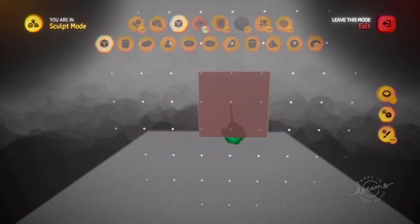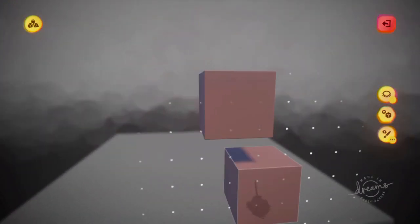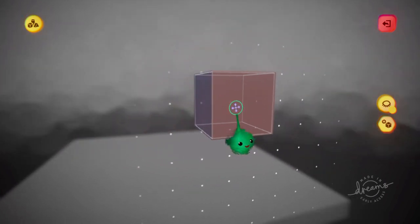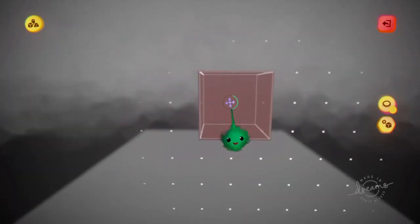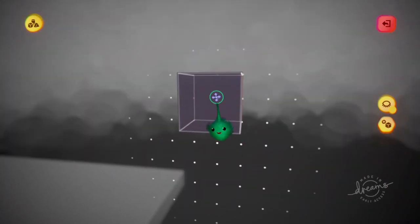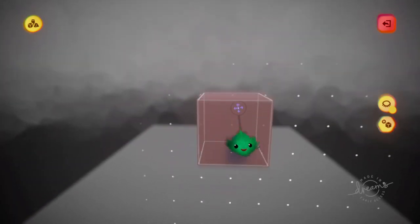If we start a new sculpt and then place a shape down, the position that we had the impact when we placed this cube is the origin point for the whole thing.